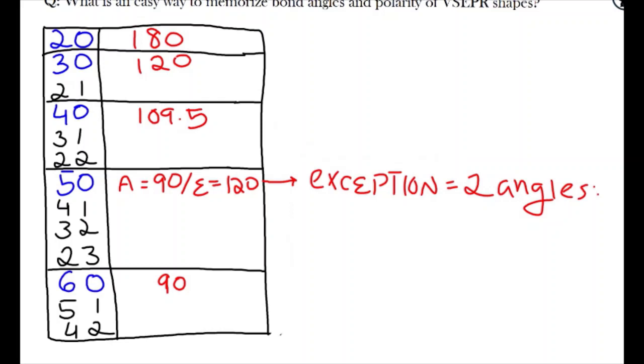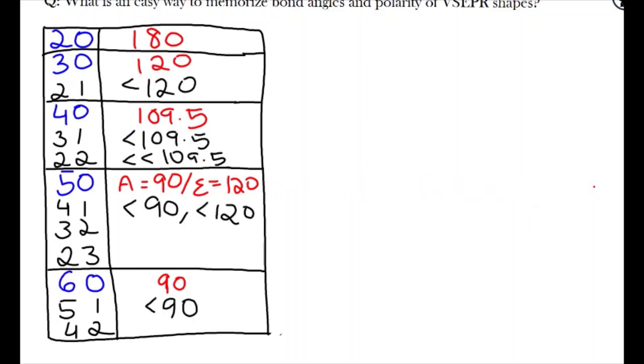Also, remember that trigonal bipyramidal has two bond angles, an equatorial and axial angle. From there, bring down the same bond angle under each secondary row of the main row, if it has one, and add an additional less than sign for each row.